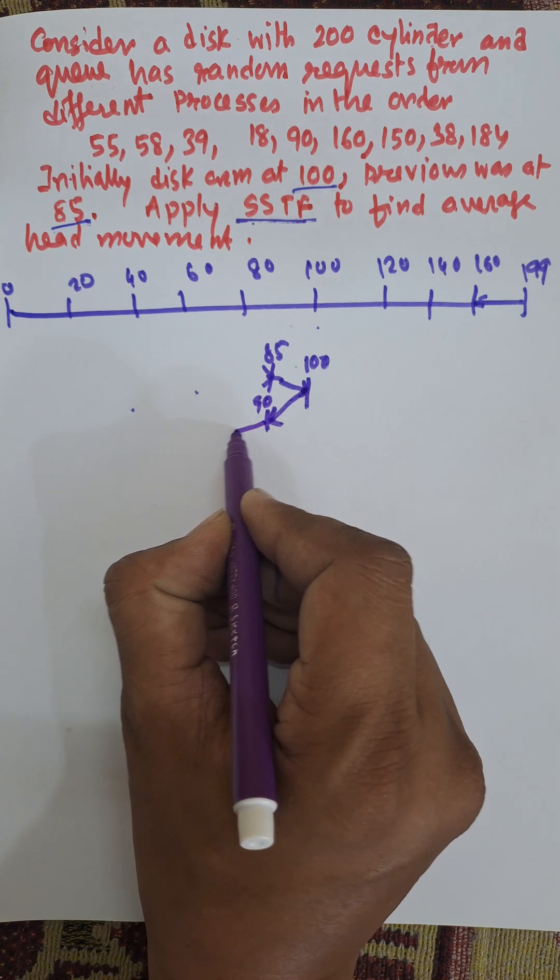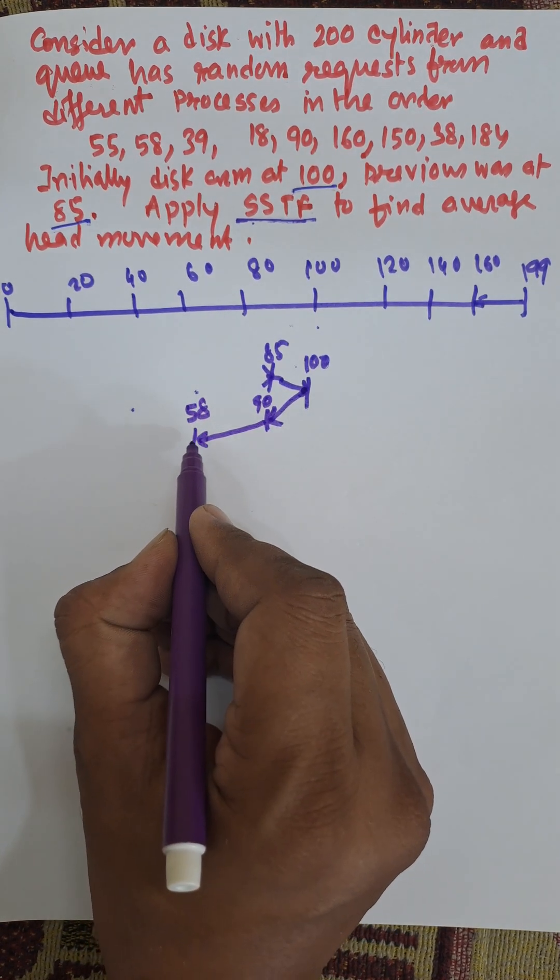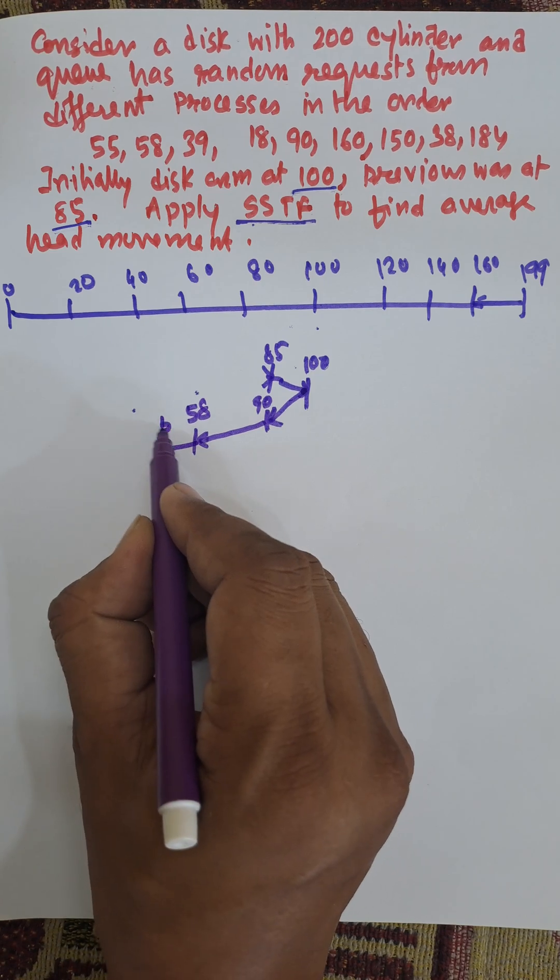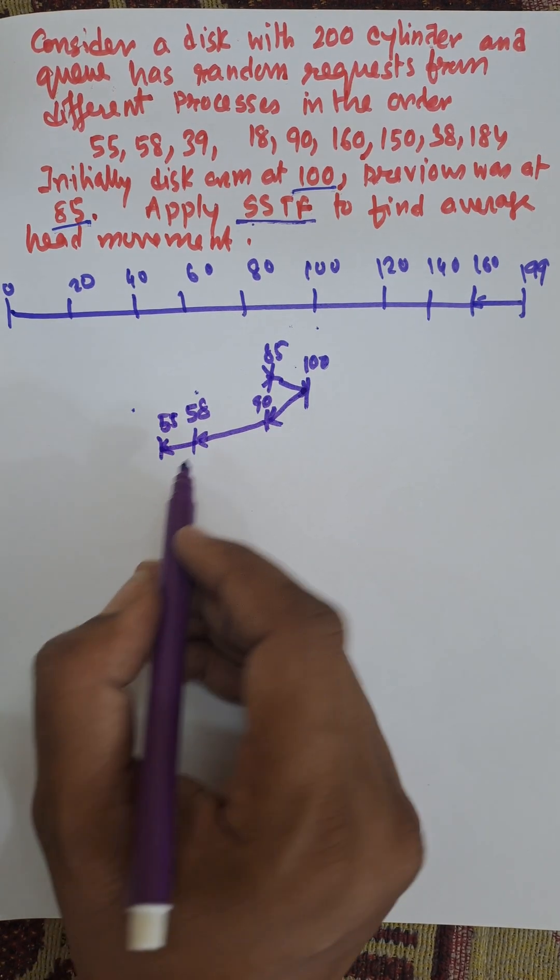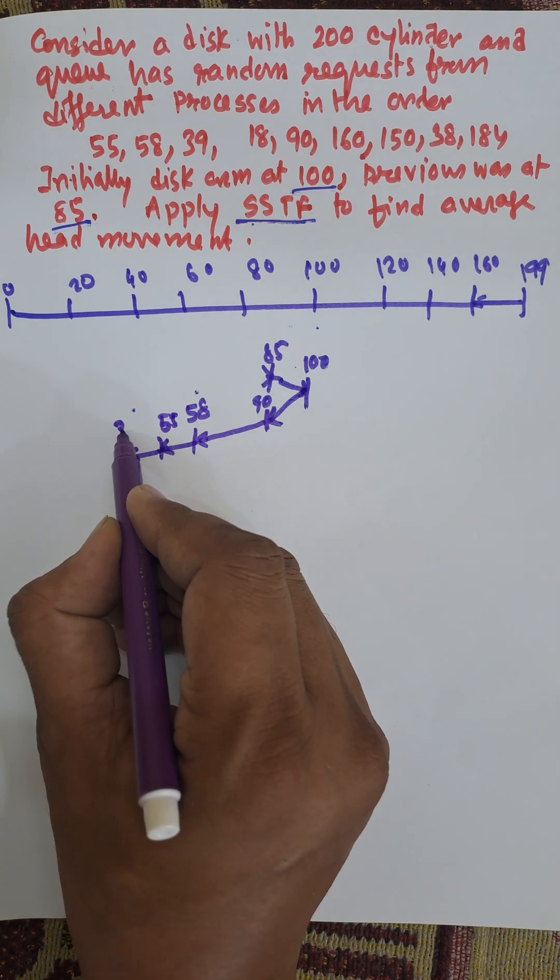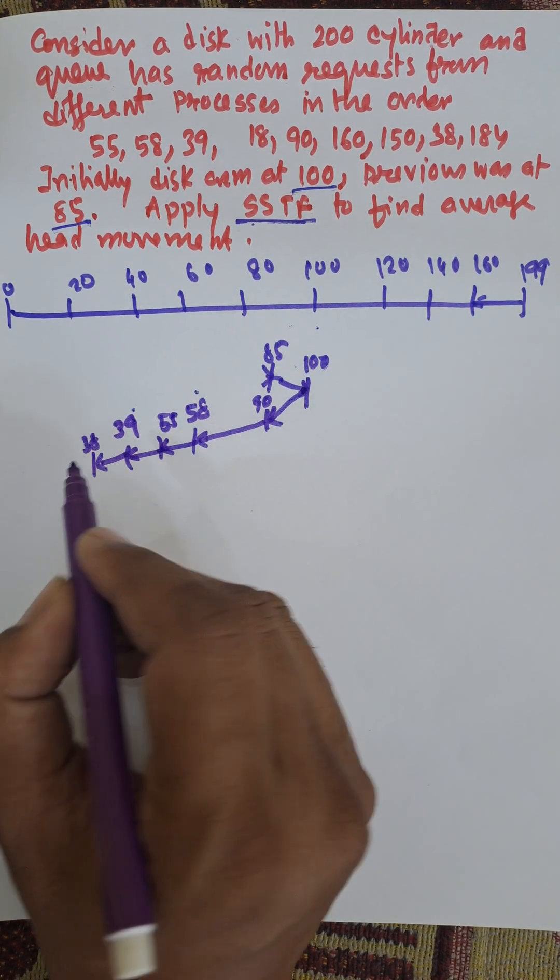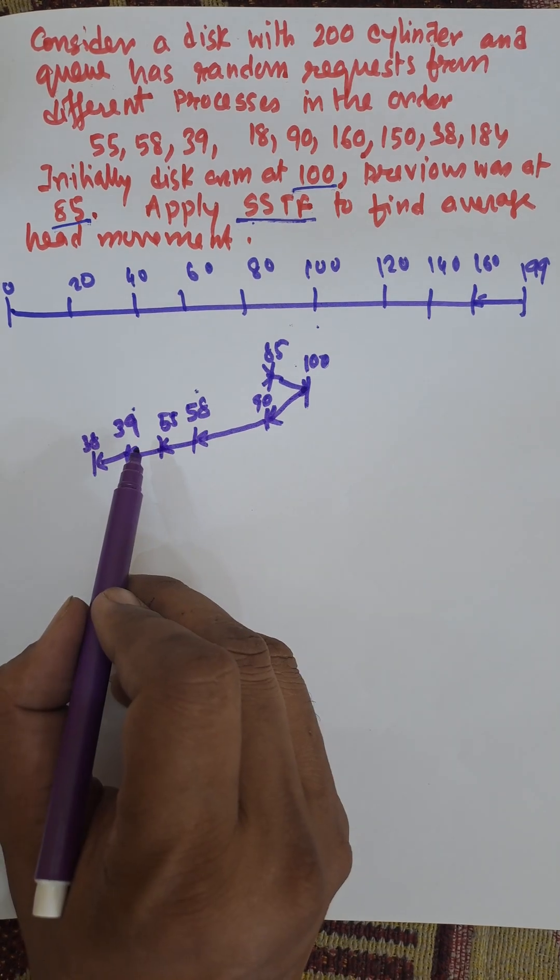From 58 we can easily move to 55. From 55 we need to move to 39. From 39 we can move to 38. From the current position to shortest seek time position, that is from 38 we can move to 18.